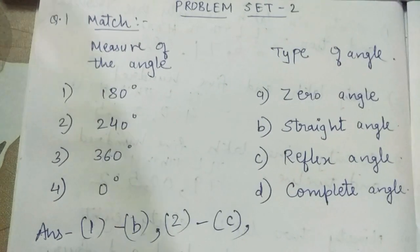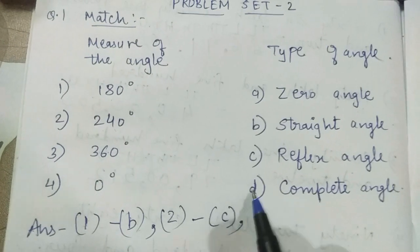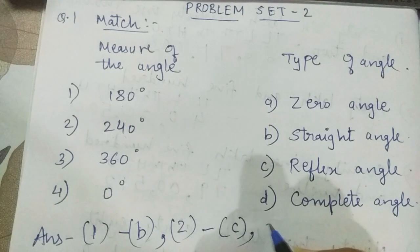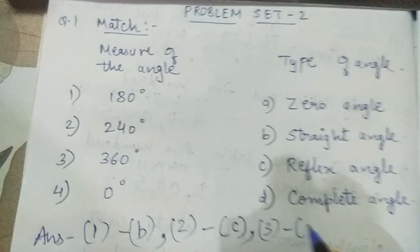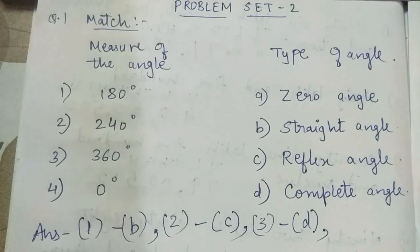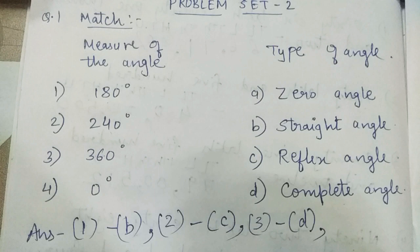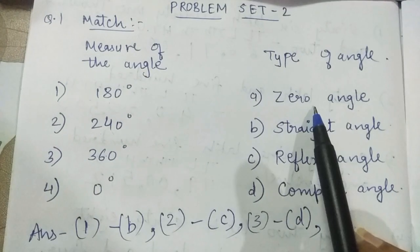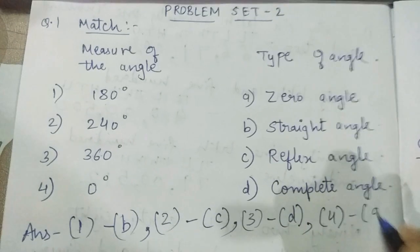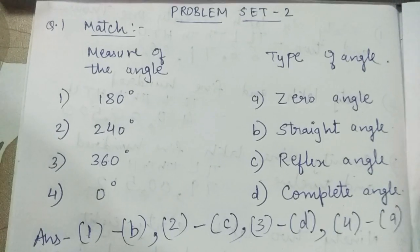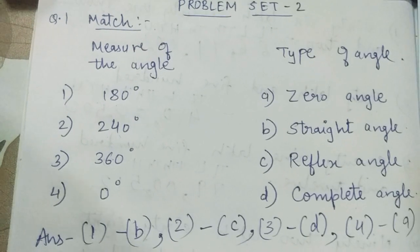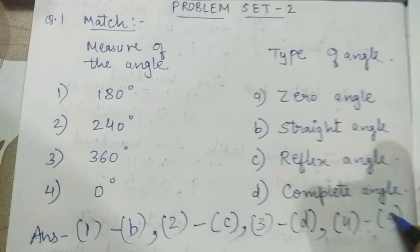Next is 360 degree — we know this is a complete angle, so 3 dash D. And lastly, 0 degree is a zero angle. Very easy. Now the same thing we have to repeat for question number 2 and question number 3, but in a different way.